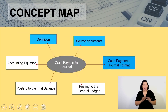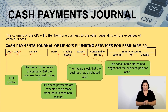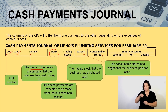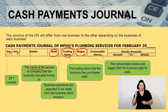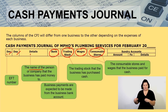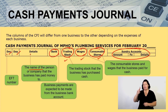Let's now see how we would record in the CPJ. Here is a format of the CPJ: you have your document, the date, and the details — which is the name of the person or company whom the business has paid. In the bank column you record all payments made from the business bank account. There are columns for trading stock, wages, and consumables. If a payment doesn't fit any of those columns, it goes into the sundry accounts.